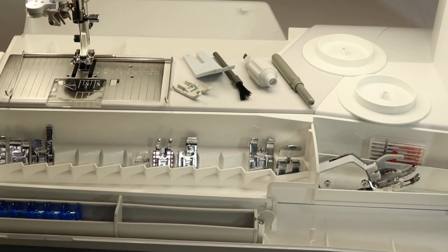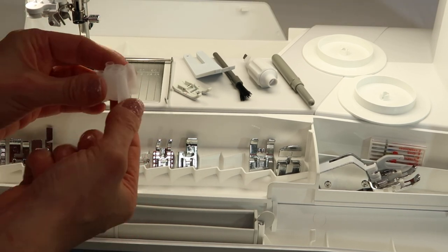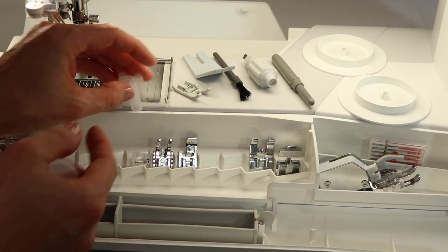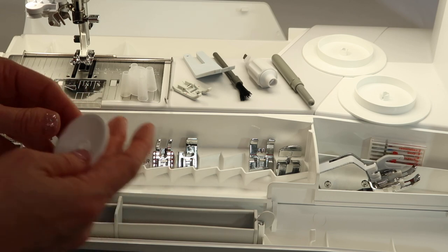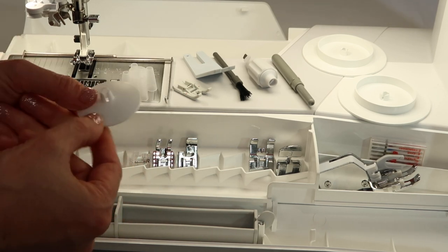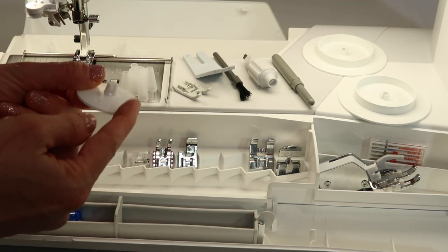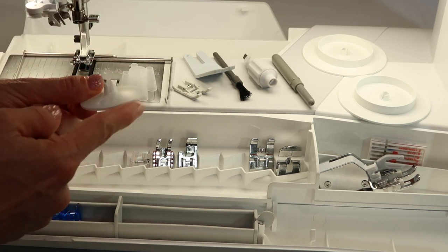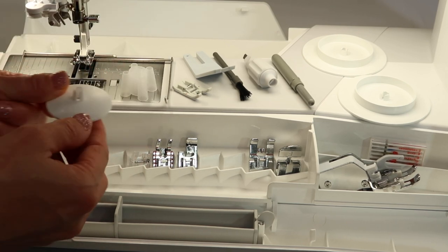You also have a couple other spool caps or spool bases, so when you are using some larger cones they don't wiggle around. Or if you're using a smaller spool of thread and it wants to catch as it's coming up to the thread guide, you can put a cap on it as well.